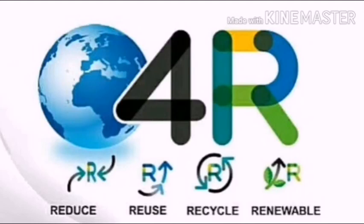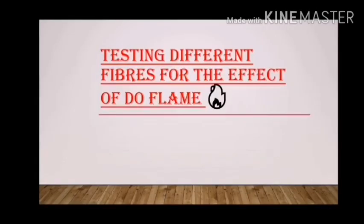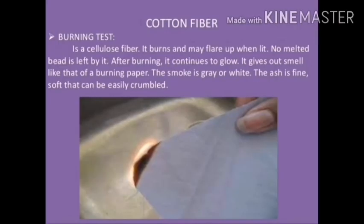Now we will learn about testing different fibres for the effect of flame. We will compare fibres like cotton, wool, rayon, silk, nylon, acrylic, etc. Cotton fibre is a cellulosic fibre — it burns and may flare up while lit, no melted bead is left. Cotton burns vigorously with a flame giving the smell of burning paper, leaving behind little powdery ash. Its smoke is gray or white and the ash is fine and soft, easily crumbled.